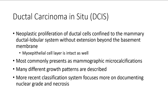DCIS most commonly presents as mammographic calcifications and has many described growth patterns and subtypes. The most important factors are nuclear grade — low, intermediate, or high — and the presence or absence of comedonecrosis, which is a central type of necrosis that causes architectural changes to the surrounding epithelium, having a compressive effect on it.